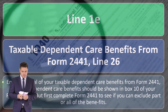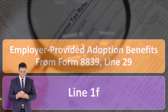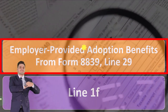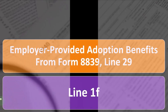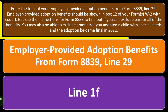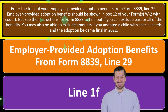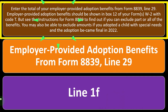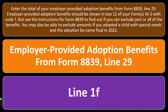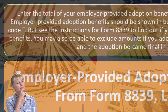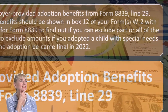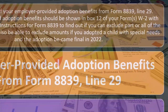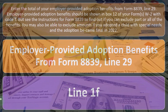First, complete Form 2441 to see if you can exclude part or all of these benefits. Line 1F: employer-provided adoption benefits from Form 8839, line 29. This is a somewhat unusual situation. Enter the total of your employer-provided adoption benefits from Form 8839, line 29. These benefits should be shown in Box 12 of your Form W-2 — that all-purpose box which has a letter code next to it. You can see more about the letter codes in the instructions for Form W-2. It usually has code T for this item. See the instructions for Form 8839 to find out if you can exclude part or all of the benefits.